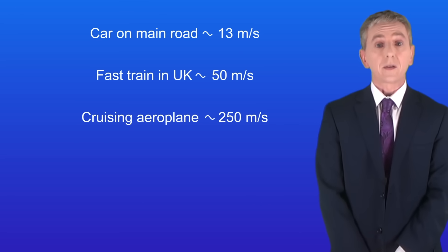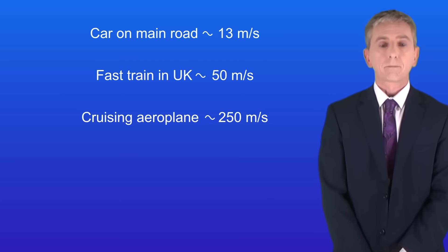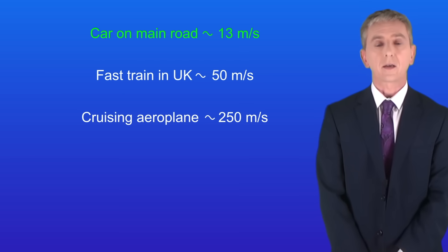Now you could also be asked to state other speeds as well, so I'm showing you those here. These are also worth learning. A car on a main road has a speed of around 13 meters per second. A fast train in the UK has a speed of around 50 meters per second. And a cruising aeroplane has a speed of around 250 meters per second.